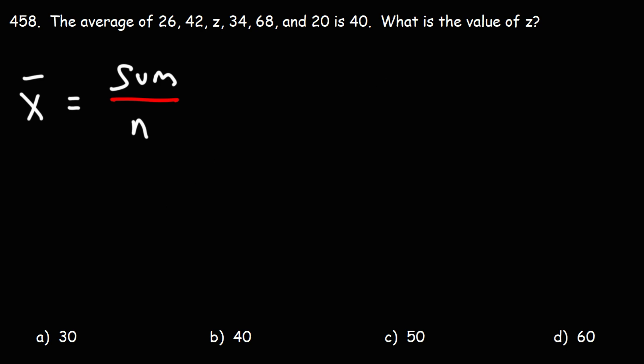So we're given the average. The average is 40, so that's going to be X bar. The sum of the numbers in the data set is the sum of those six numbers: 26 plus 42 plus Z plus 34 plus 68 plus 20. And that's six numbers, so we need to divide that by six.